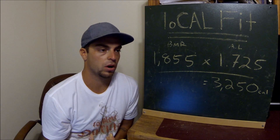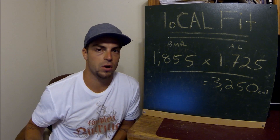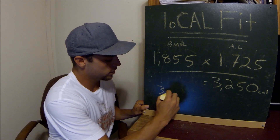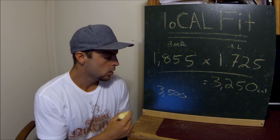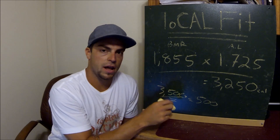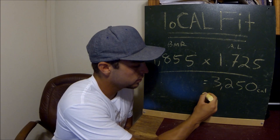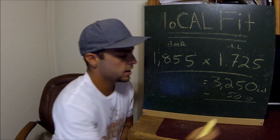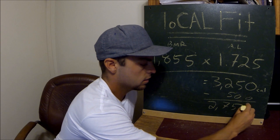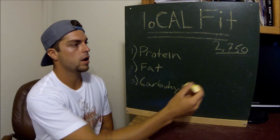Since our goal is to lose weight, we have to put ourselves in a caloric deficit — burning more calories than we take in. We're aiming to lose about one pound of body fat per week. One pound of body fat equals 3,500 calories; divide that by seven and that's 500 calories a day. So we subtract 500 from our total caloric intake, which gives us 2,750 calories per day.